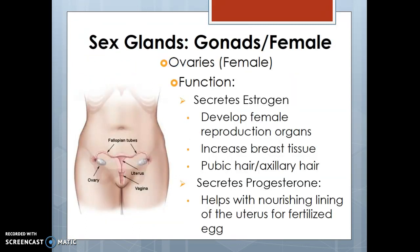The female sex gland is the ovaries. The ovaries secrete estrogen, which helps develop the reproductive organs for females, gives them breast tissue, and helps with production of pubic and axillary hair. The ovaries also secrete progesterone, which is important in nourishing the lining of the uterus after an egg has been fertilized and planted into the uterus for a baby to grow. So the two important hormones are estrogen and progesterone.